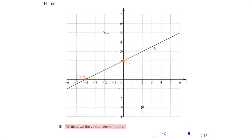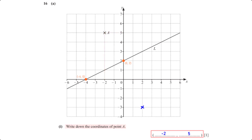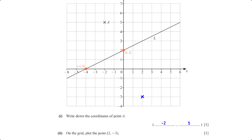Write down the coordinates of point A. When we map A onto the x-axis we get negative 2, and when we map it onto the y-axis we get 5, so we have (−2, 5). On the grid, plot the point (2, −3).